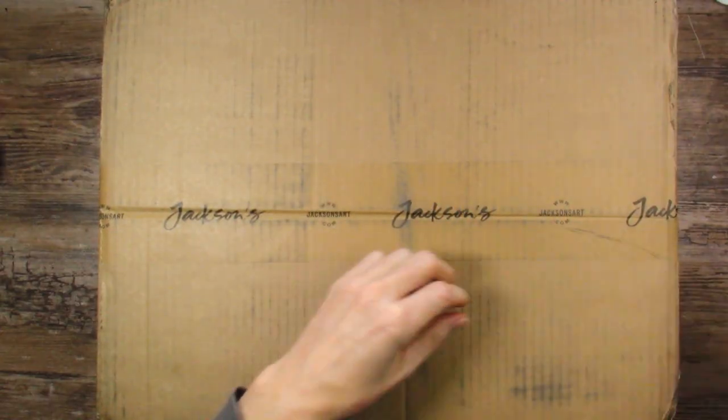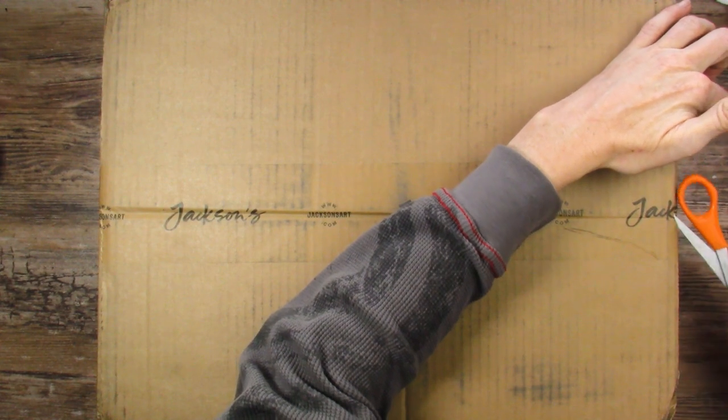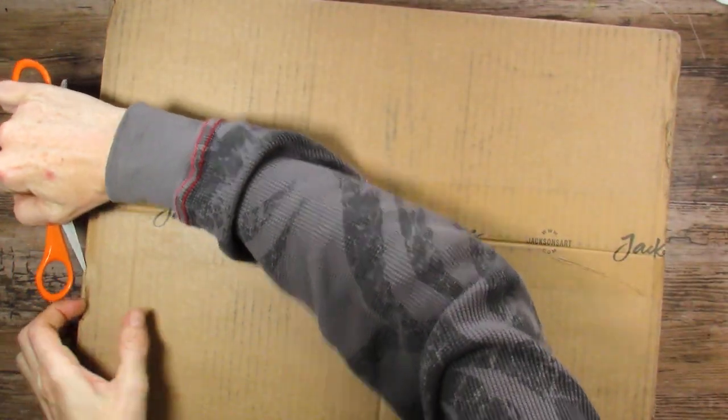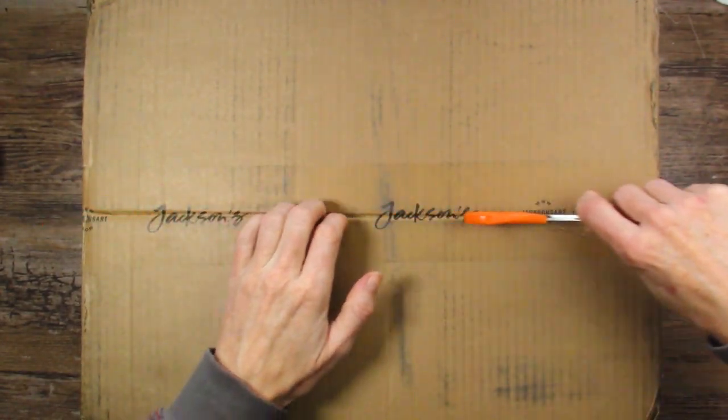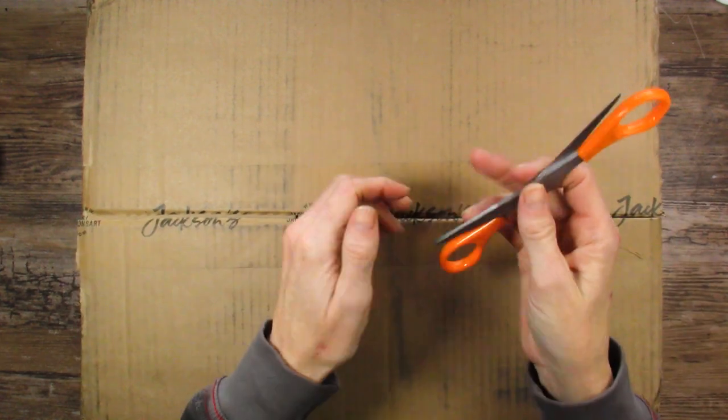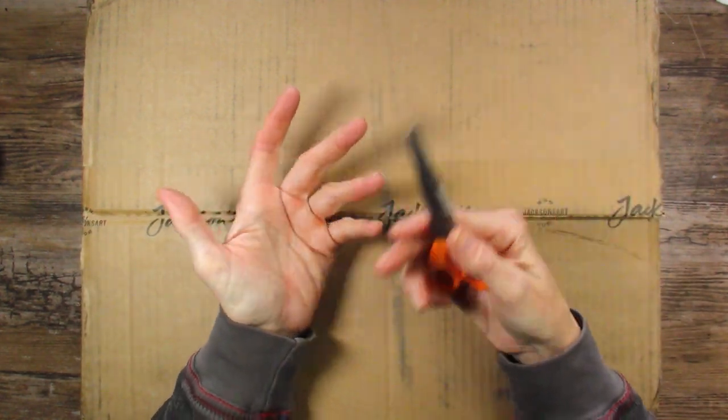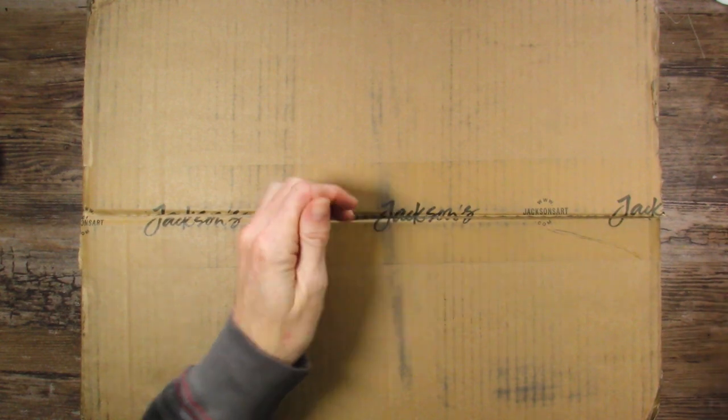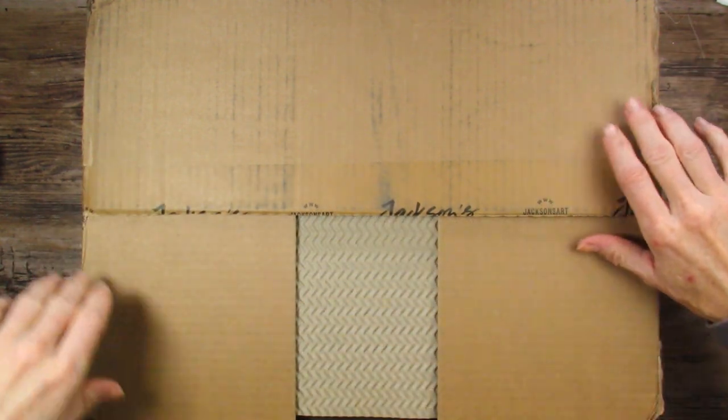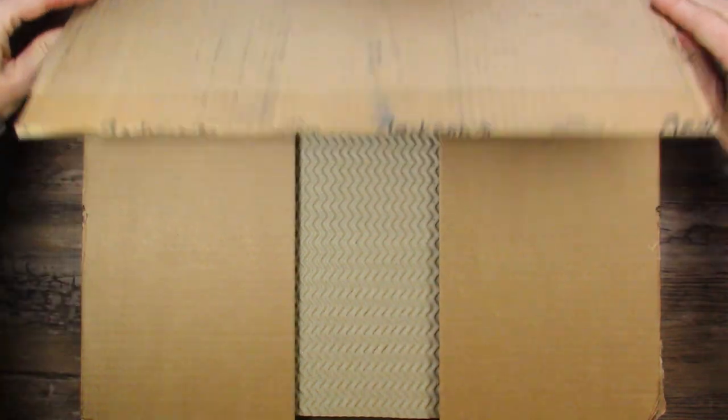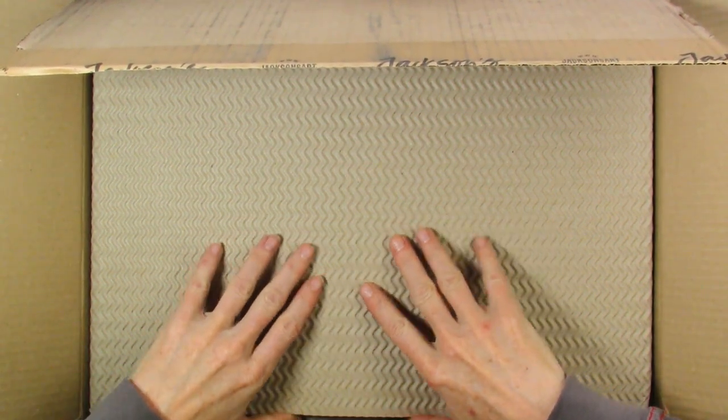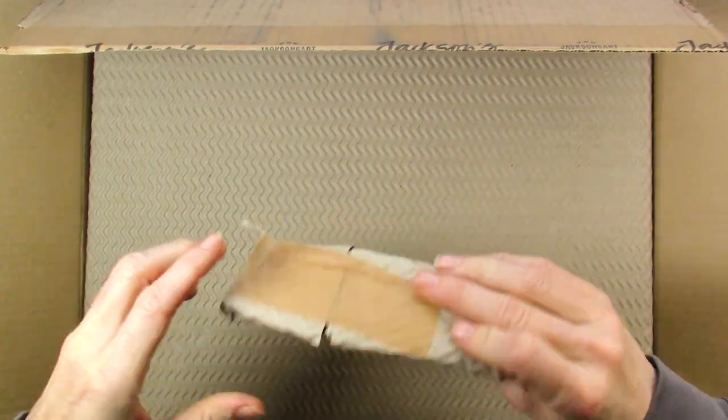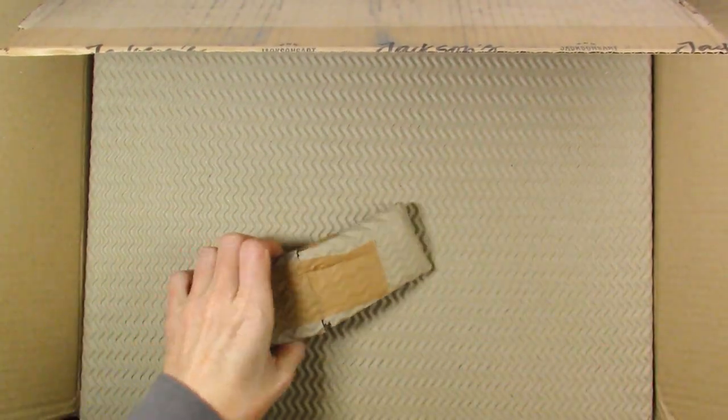So why is this box so big? When I went online to get the four remaining colors that I wanted, it happened to coincide with Jackson's major sale on watercolor paper. I just took advantage of that and I'm opening this box from the bottom because the front looks kind of complicated. I bought a bunch of paper, a whole bunch of watercolor paper.